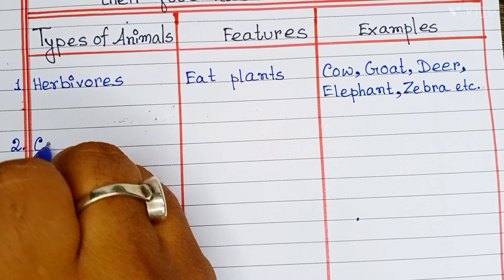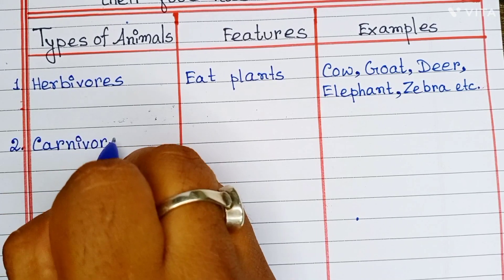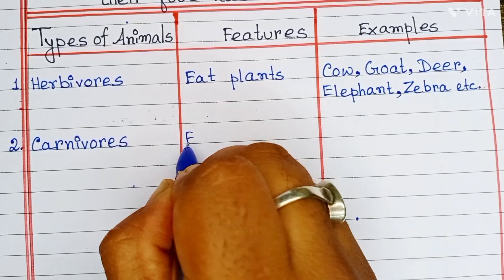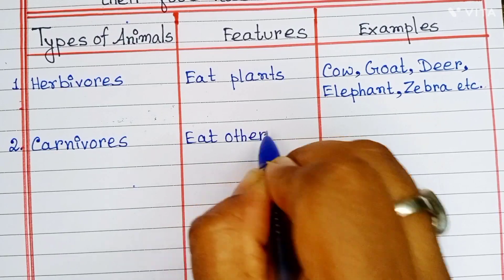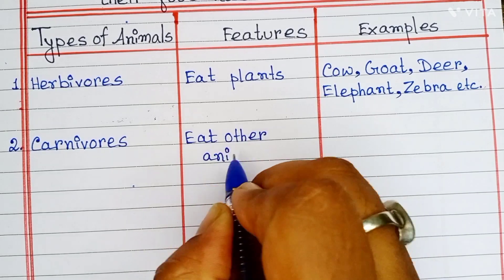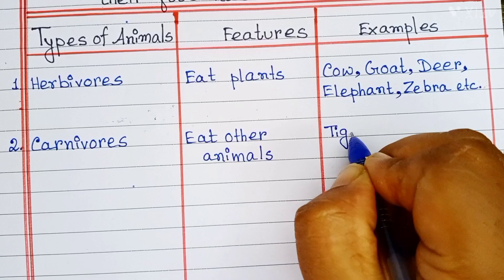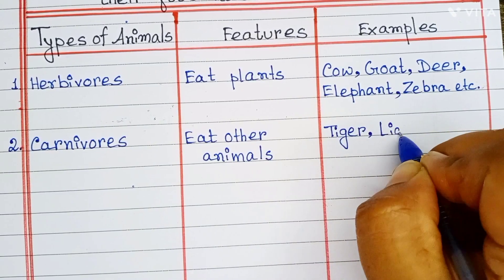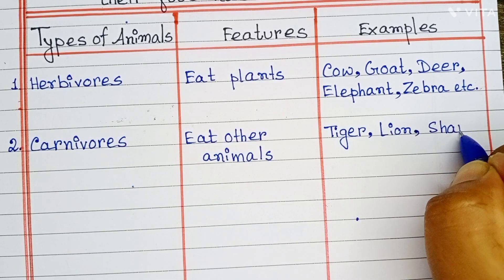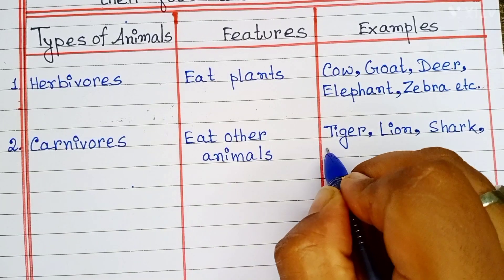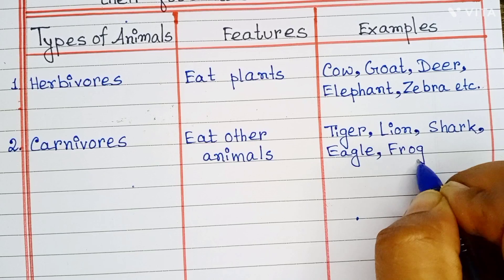Number two: carnivores animals. They eat other animals. Examples are tiger, lion, shark, eagle, frog, etc.